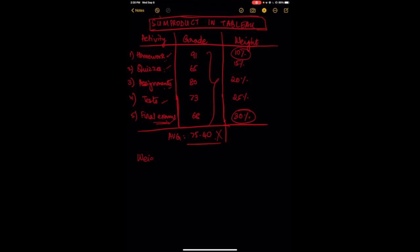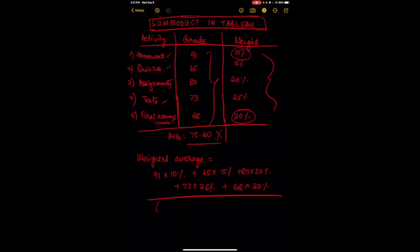What we actually need to do is calculate a weighted average, which takes into account the relative importance of each module. That means we need to compute: 91 × 10% + 65 × 15% + 80 × 20% + 73 × 25% + 68 × 30%, which adds up to 100%. This weighted average comes out to 73.40, and that is the real grade obtained by the student.